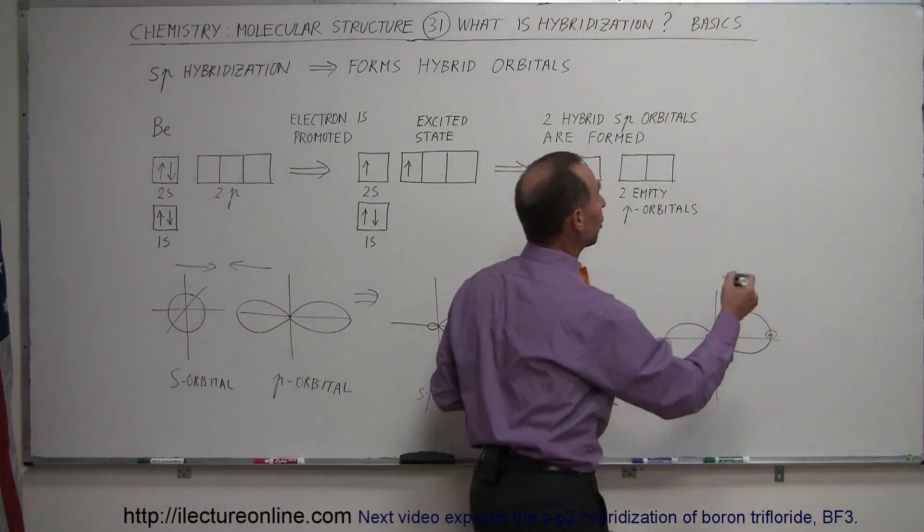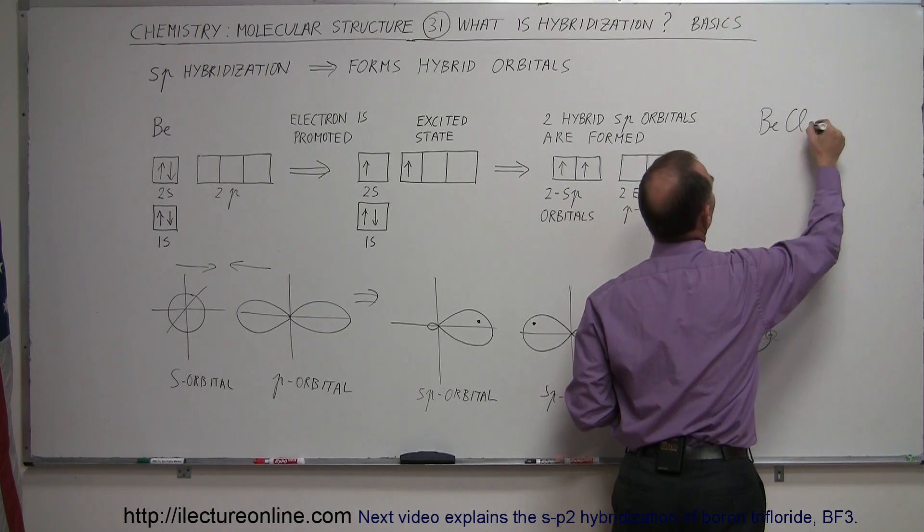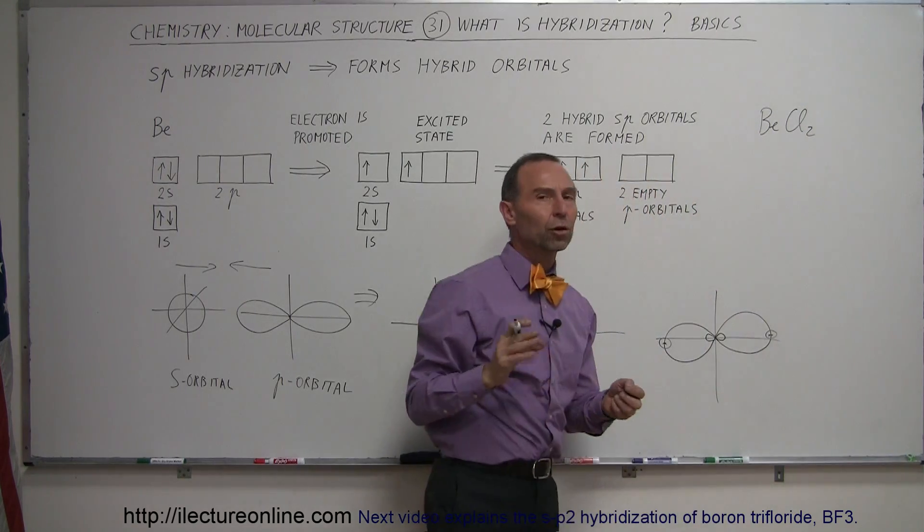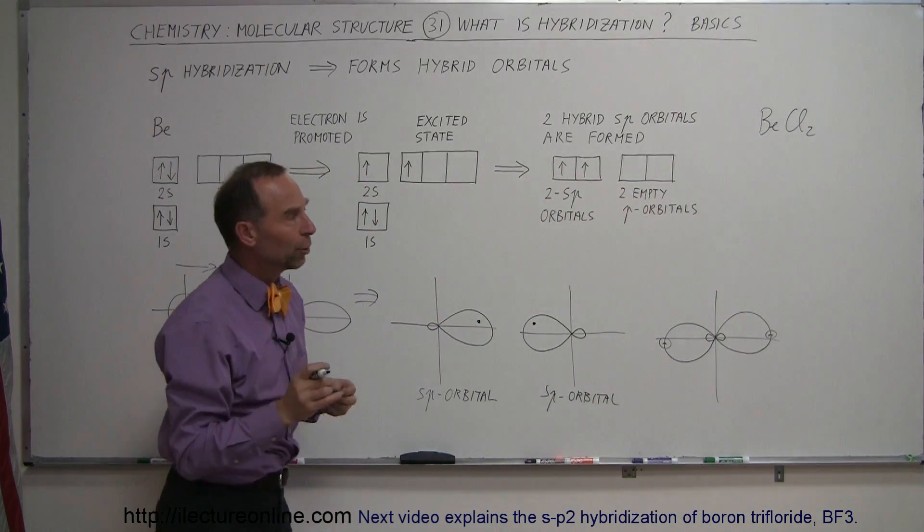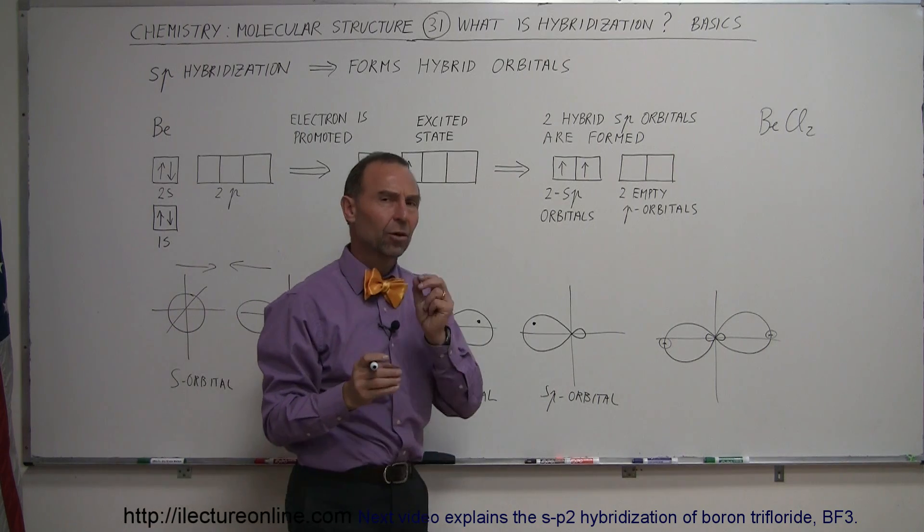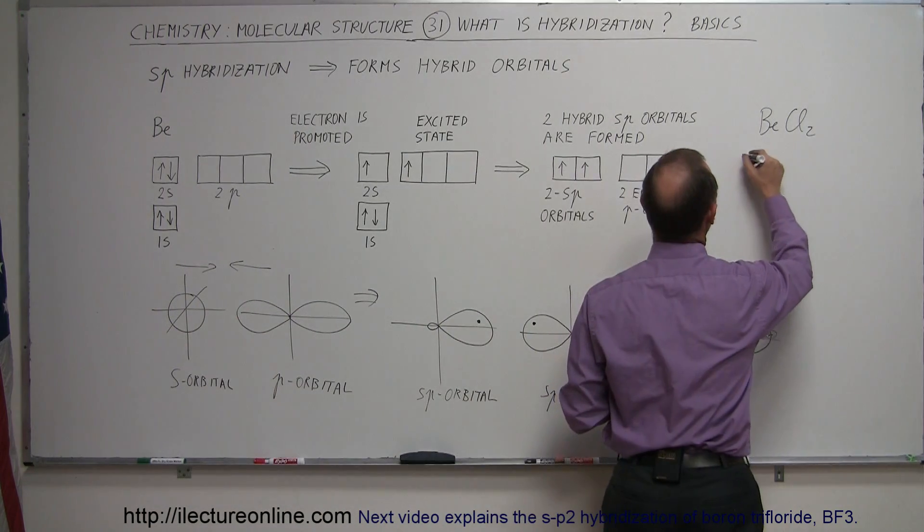So how does beryllium chloride then form? So beryllium chloride like that. Notice that each of the chlorine atoms can take one of its p orbitals because it has just one electron in that. Let me draw what that looks like.